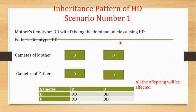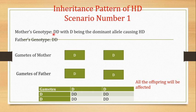In this video I want to focus on the different scenarios or inheritance patterns of Huntington's disease. Scenario number one: the genotype of the mother is capital D and capital D — capital D being the dominant allele causing HD — and the genotype of the father is also capital D and capital D.